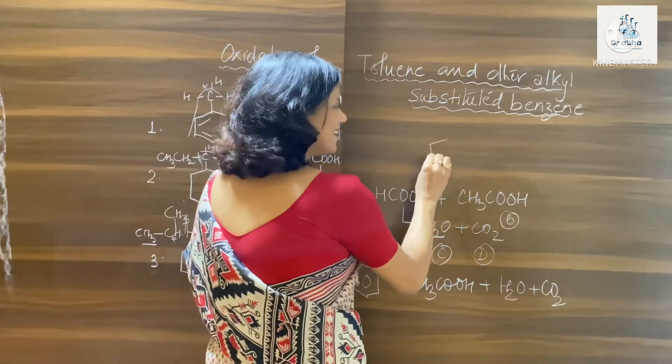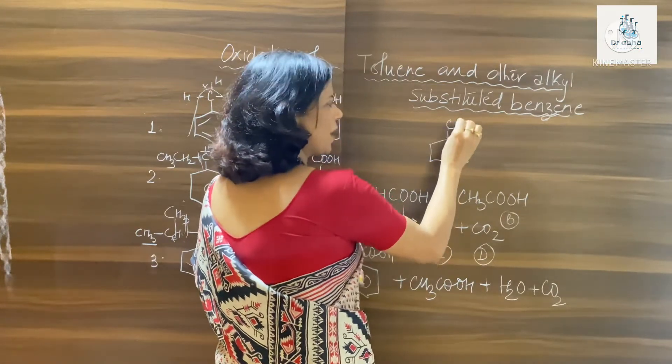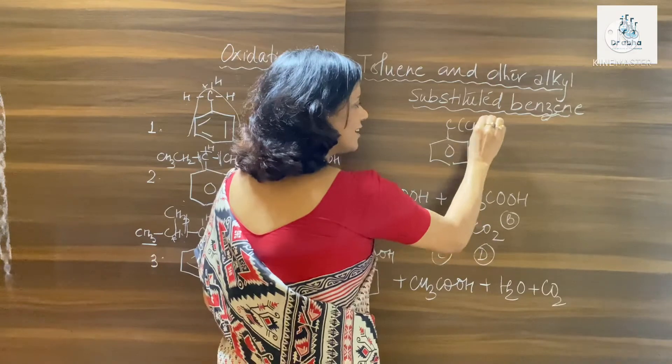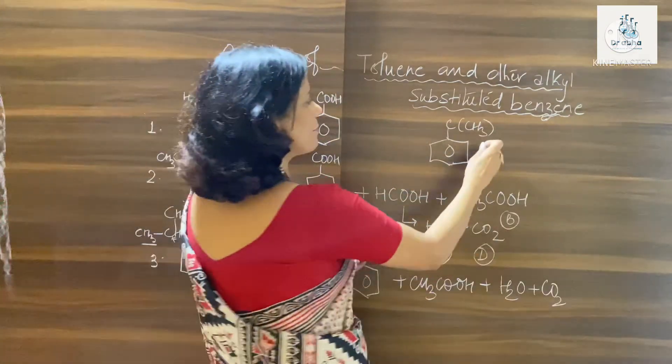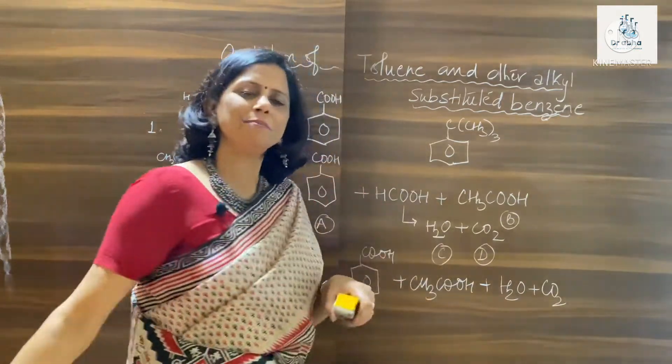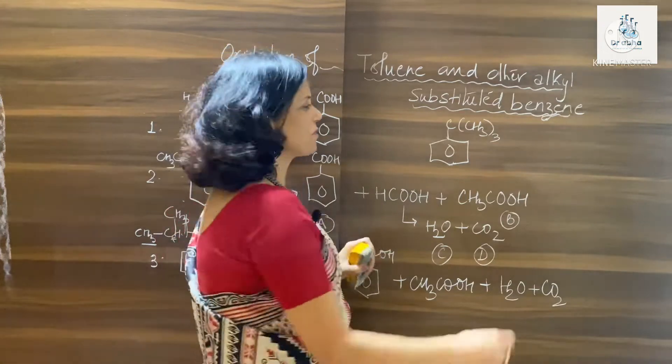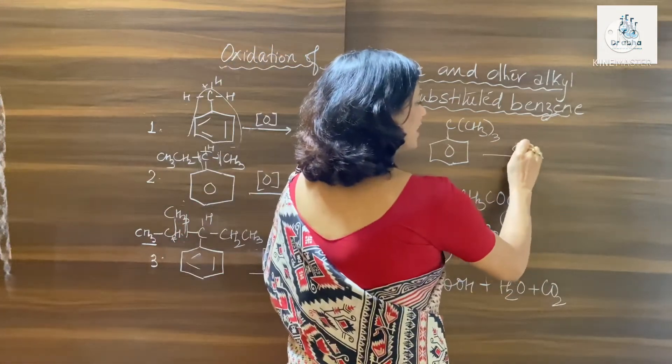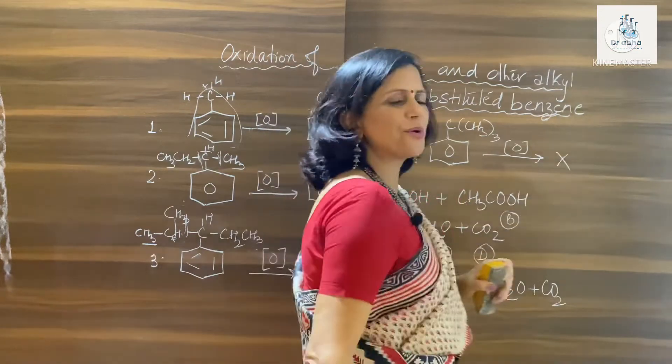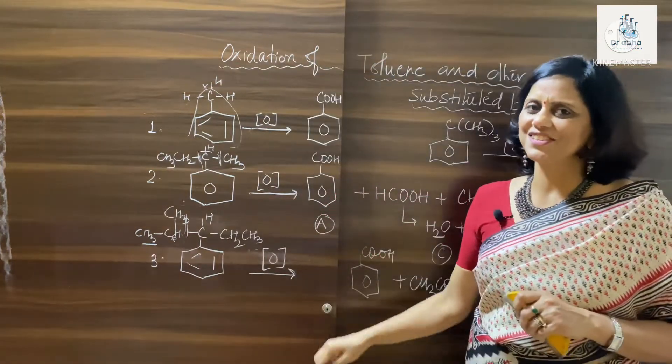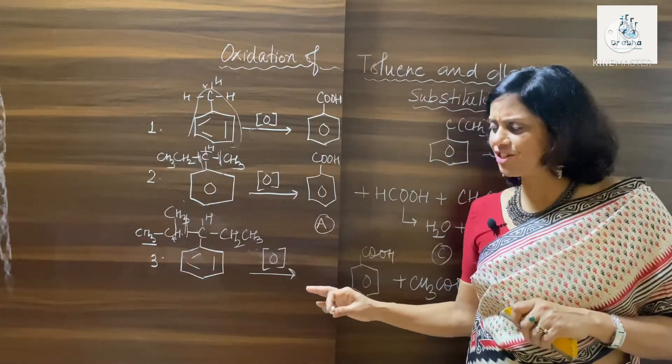So suppose you have tert-butyl, suppose you have tert, this carbon has got three methyl groups attached, you have tert-butyl benzene. So what is going to be the oxidized product? There is no hydrogen, so this will not undergo oxidation under these conditions.